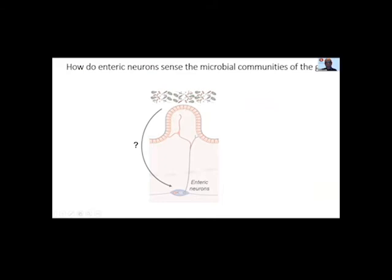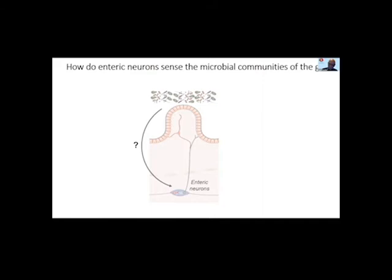We proposed from these experiments that the enteric neurons are capable of sensing the content of microbiota in the lumen. Yuki Obata in the lab wanted to understand the molecular mechanism that allows enteric neurons to sense the microbiota. He made an assumption: if such molecular mechanisms exist, they should be more prominent in colonic neurons, for the simple reason that the colon contains a heavy load of microbiota. He designed an experiment to compare the transcriptome — the various transcripts present — in colonic neurons versus small intestine neurons in various conditions.